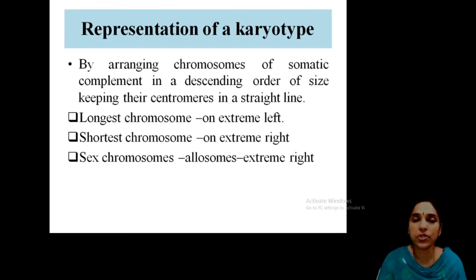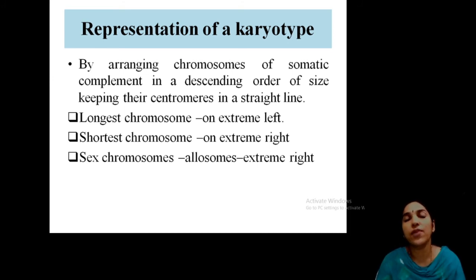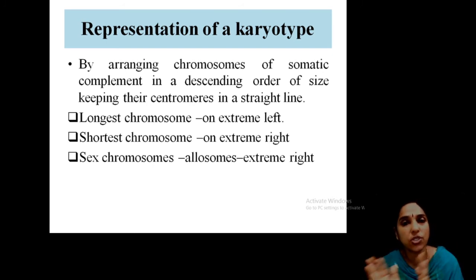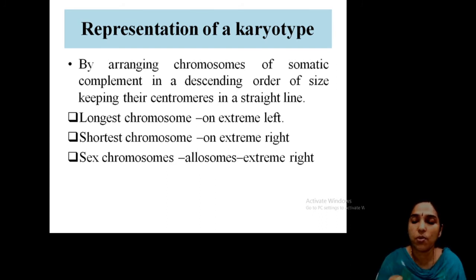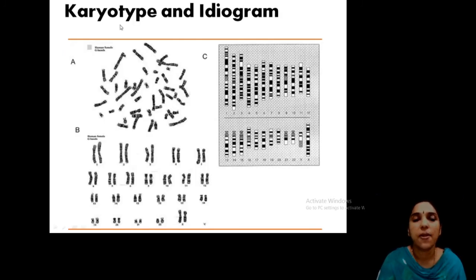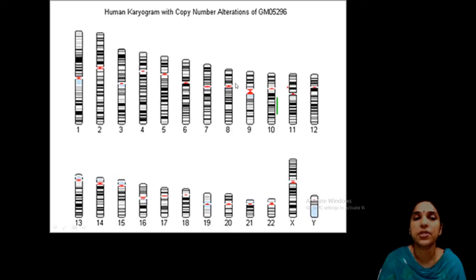Chromosomes are arranged in descending order of size — from larger to smaller. The longest chromosome goes to the extreme left, and the shortest to the extreme right. Sex chromosomes are also placed at the extreme right. As seen in this human karyogram, chromosomes are numbered according to size using banding patterns.